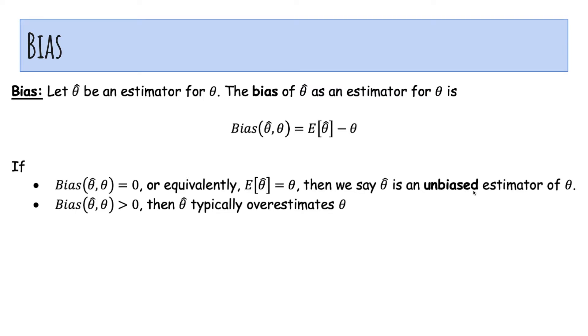If the bias is positive, then theta hat typically overestimates theta. The expected value of theta hat is typically greater than theta. And same for negative, we'll typically underestimate theta. So we do want our estimators to be unbiased, meaning that the bias is zero.